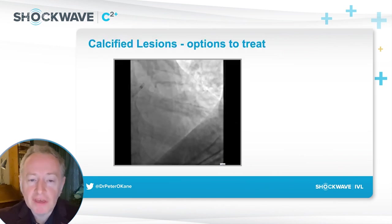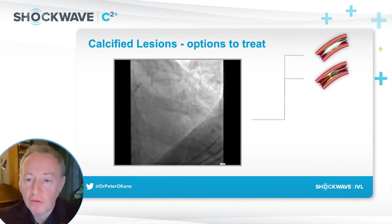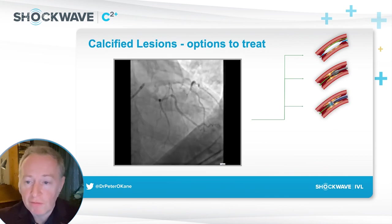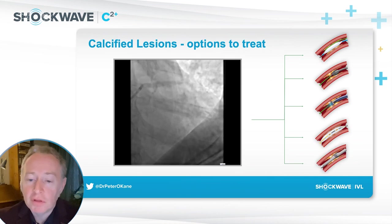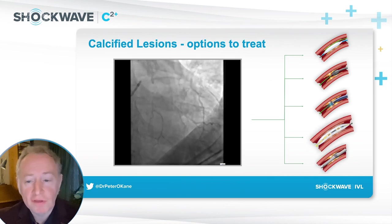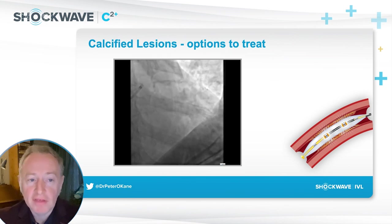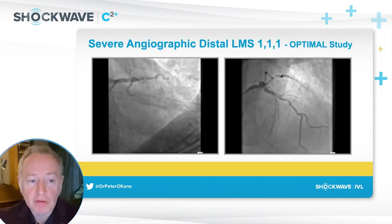We have to think about how we're going to treat this vessel. There are several options available: balloon treatment with non-compliant, cutting, or scoring; rotational atherectomy; laser; shockwave; and orbital atherectomy. But I think shockwave is my number one treatment here if I can deliver the device, and as you'll see, that's actually where we're going to treat.